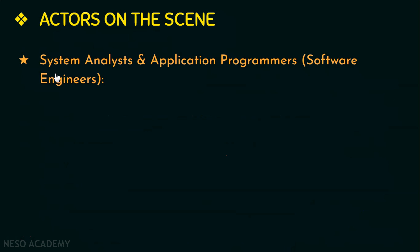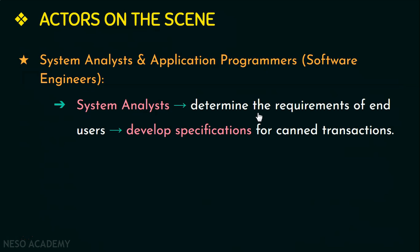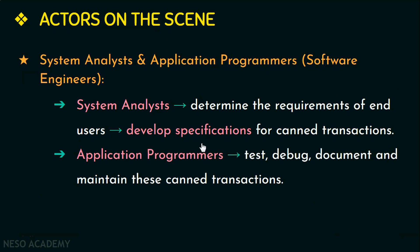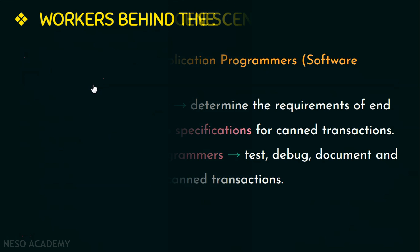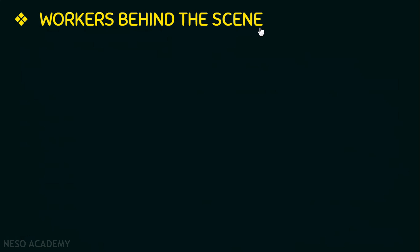The next type of database users are system analysts and application programmers, otherwise called software engineers. System analysts determine the requirements of end users — especially naive or parametric end users — and develop specifications for canned transactions. Application programmers are responsible for testing, debugging, documenting, and maintaining these canned transactions. They must be experts and completely familiar with the facilities provided by the DBMS.